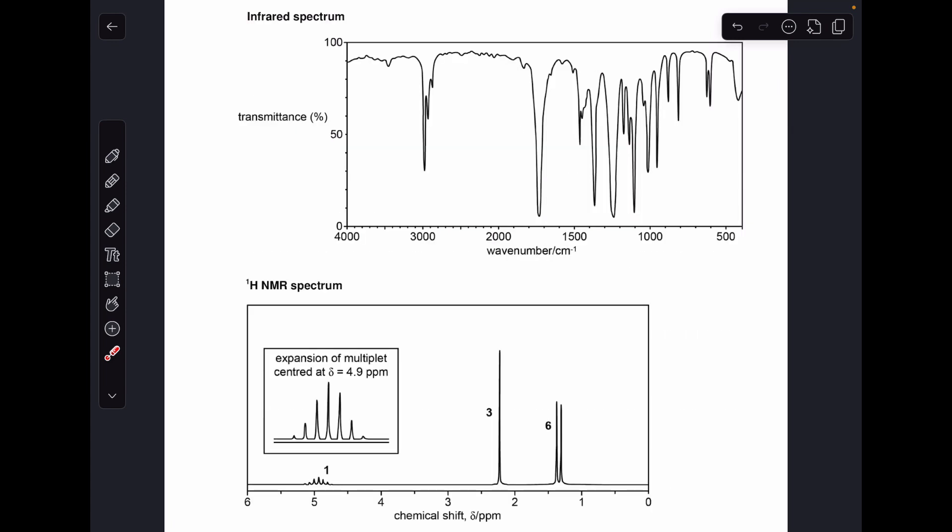Moving on to the infrared spectrum now there's not really a lot we can say here apart from the fact that this absorption here is telling us that we've got a C double bond O in our molecules. I'm just going to annotate the spectrum which is what I would totally recommend that you do.